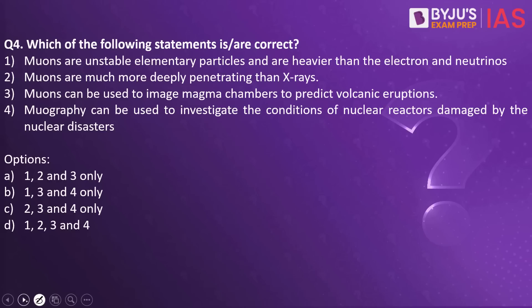Which of the following statements about muons are correct? Statement one: muons are unstable elementary particles and are heavier than electrons and neutrinos. Statement two: muons are much more deeply penetrating than X-rays. Statement three: muons can be used to image magma chambers to predict volcanic eruptions. Statement four: muography can be used to investigate the conditions of nuclear reactors damaged by nuclear disasters. The answer is all four statements — 1, 2, 3, and 4.